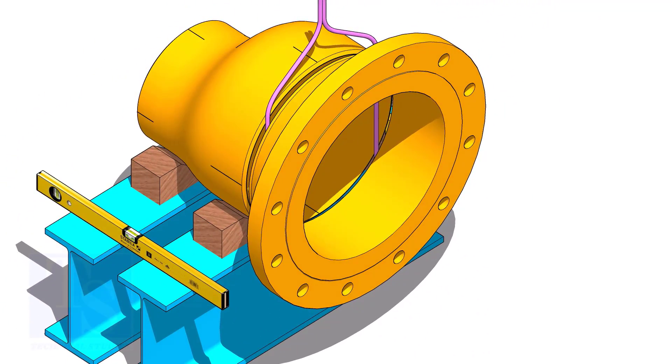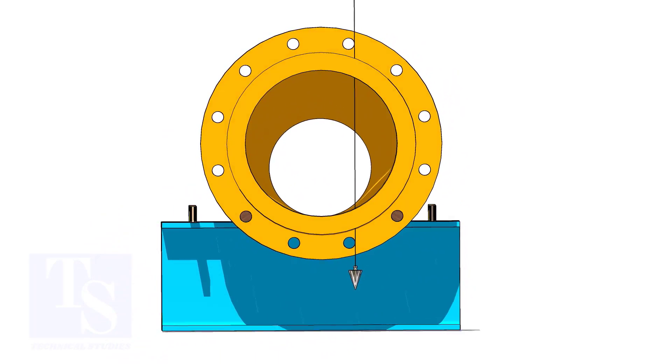Put flange in the gap rod. Arrange proper supports below the flange. Plumb the flange through the holes as shown.